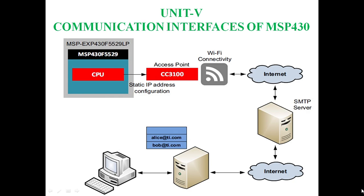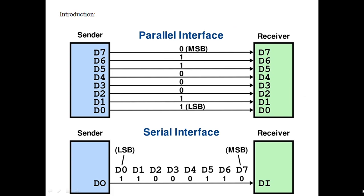Unit 5: Communication Interfaces of MSP430. Communication means transferring the data from one device to another device — for example, input devices to microprocessors, microcontroller to memory, or microcontroller to output devices or additional hardware circuits. In this diagram, the data is transmitting from MSP432 to a computer using Wi-Fi. There are two types of communication: parallel communication and serial communication.